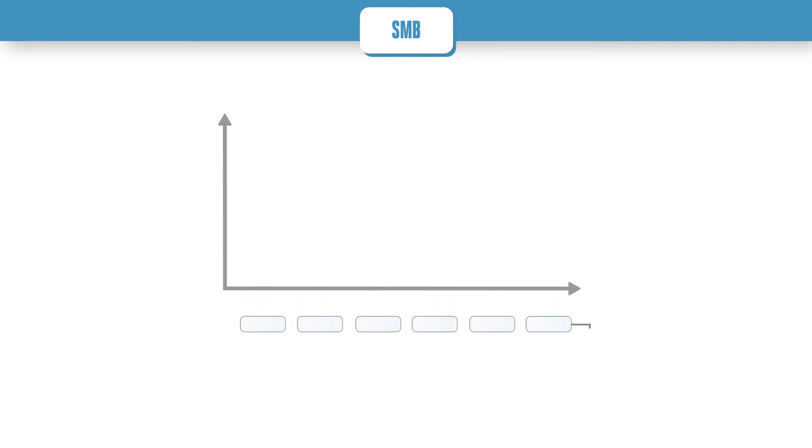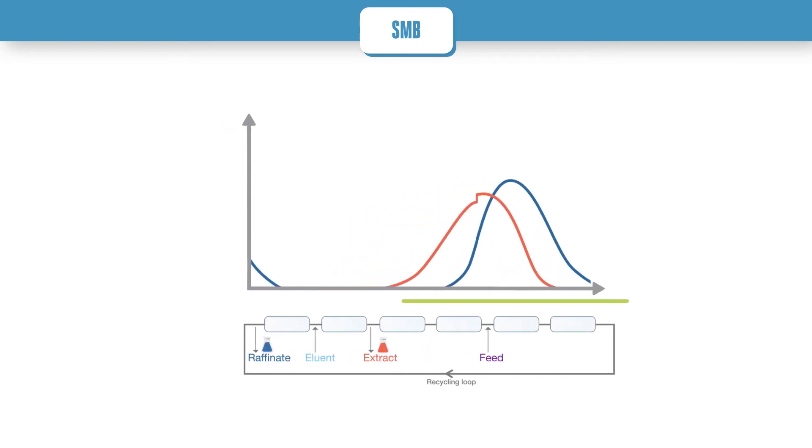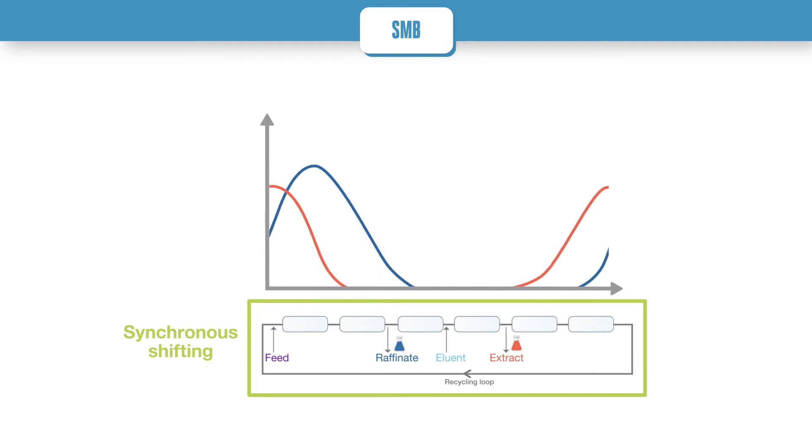SMB, simulated moving bed, is a continuous chromatography technology. In SMB, a true counter-current between the liquid and the solid phases is simulated, by the periodic, synchronous shifting of inlet and outlet streams along the loop of columns.